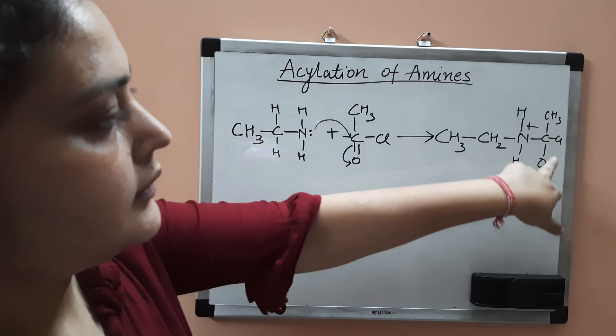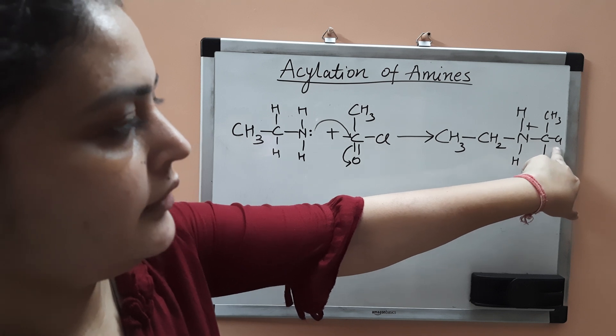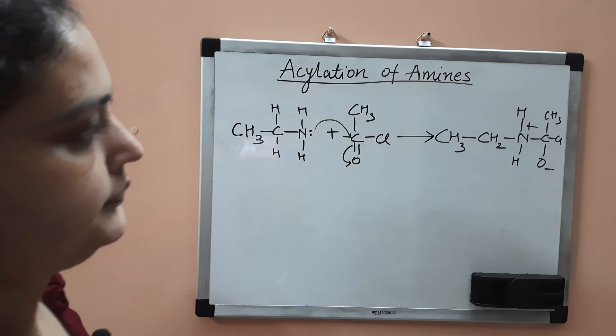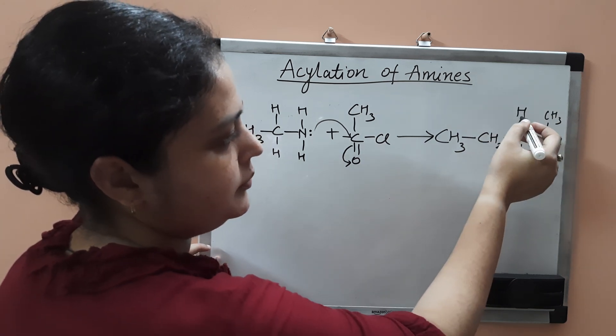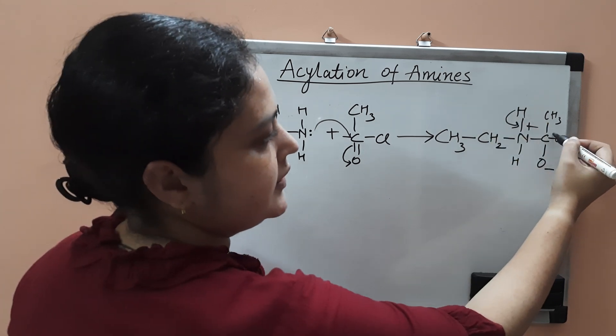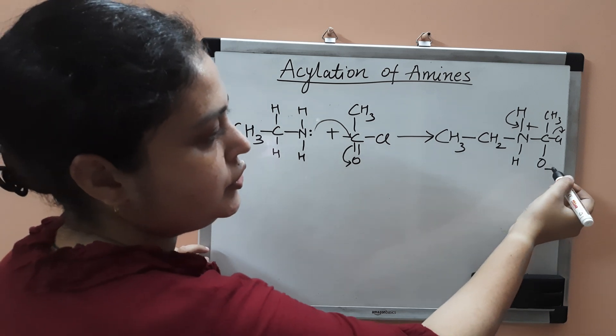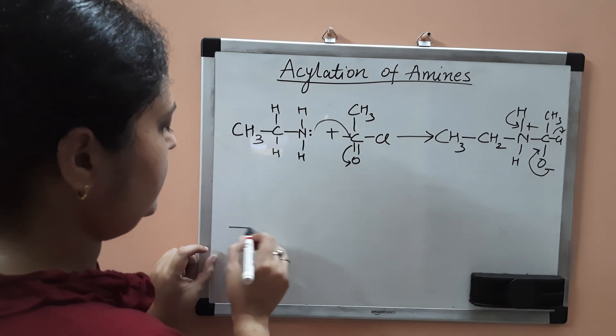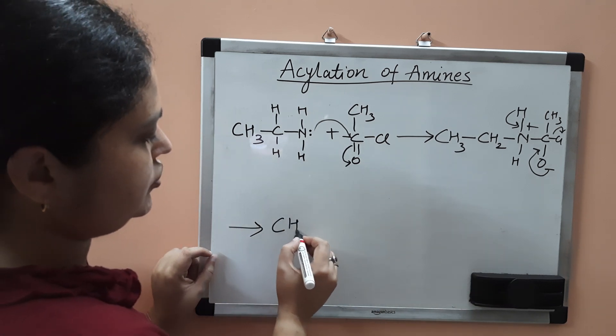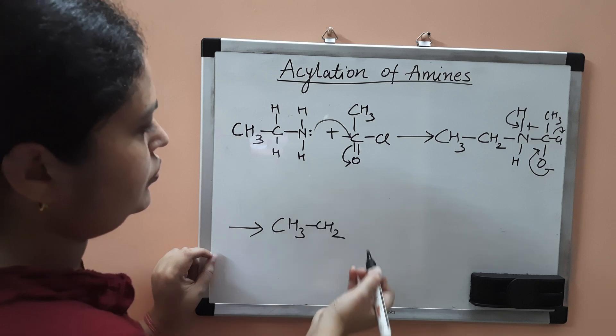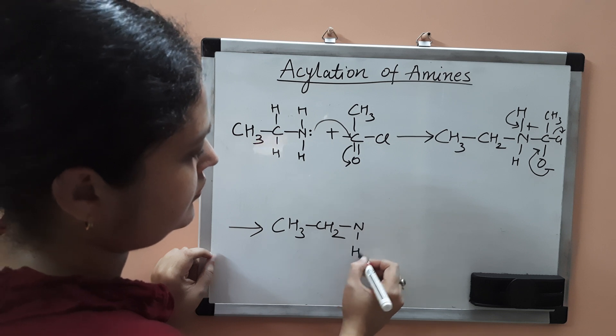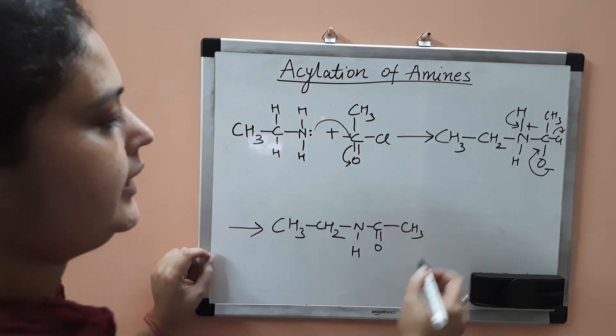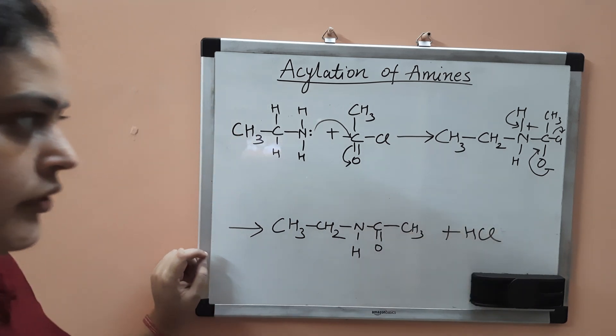Now the chlorine ion will leave as chloride ion, and you will get your amide. This hydrogen atom will leave as H plus ion, and this will leave as Cl negative ion. The product will be CH3CH2NHC double bond OCH3, and HCl has been removed. This is your amide.